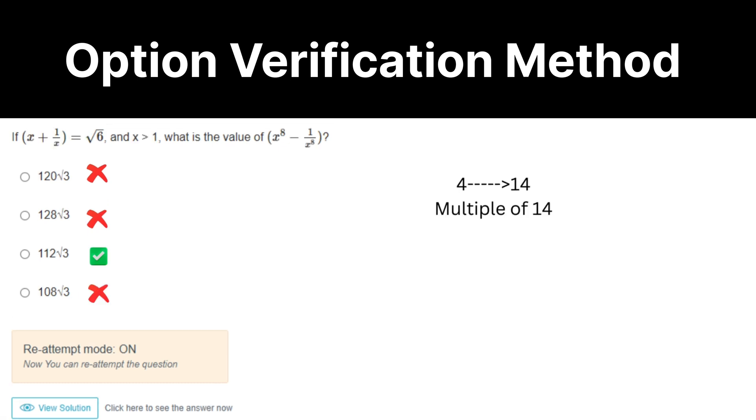Again, see here: x power 8 minus 1 by x power 8. We can split it into x power 4 minus 1 by x power 4 times x power 4 plus 1 by x power 4. So for that, the first one will be k square minus 2, which means 4. Again, k square minus 2, which means 14. So answer should be a multiple of 14. Just verify the options.